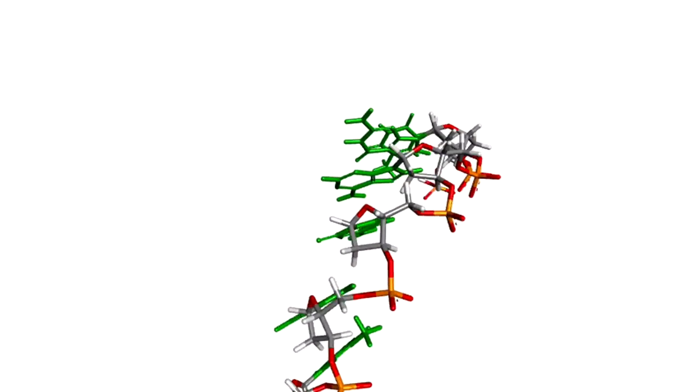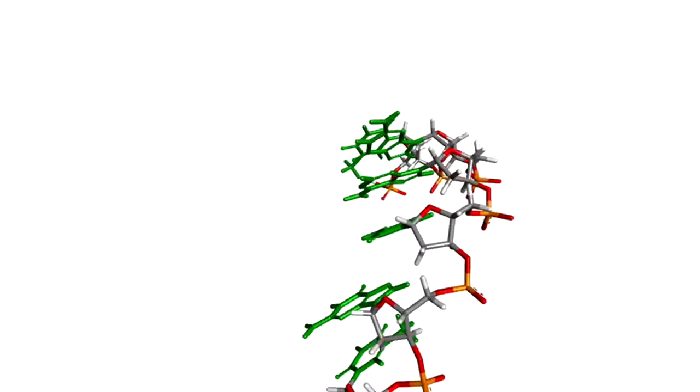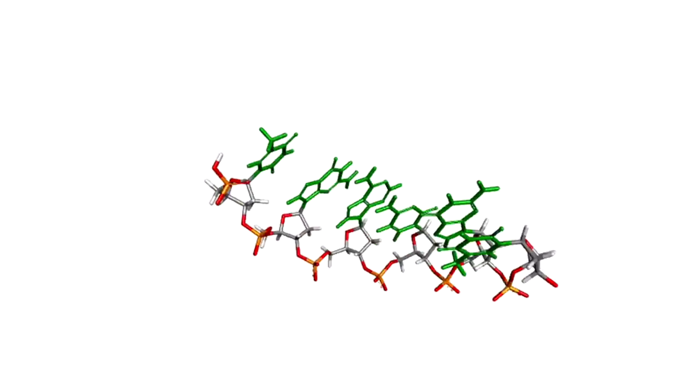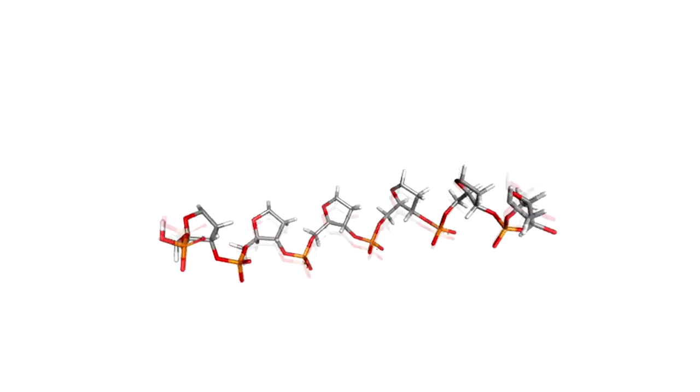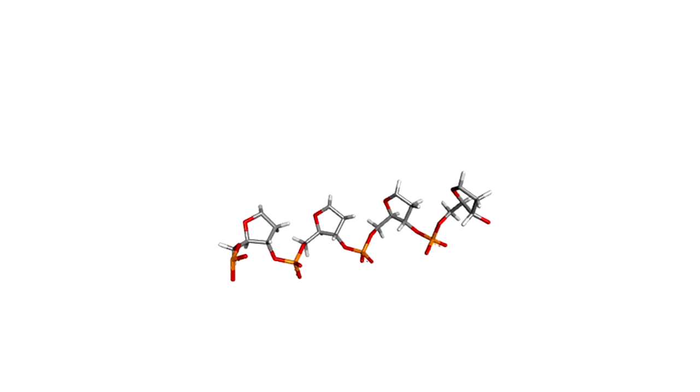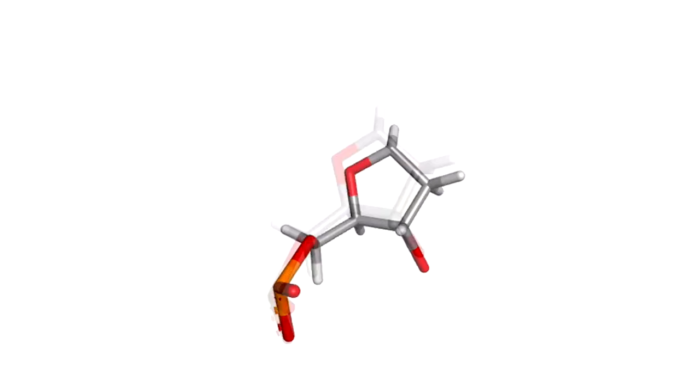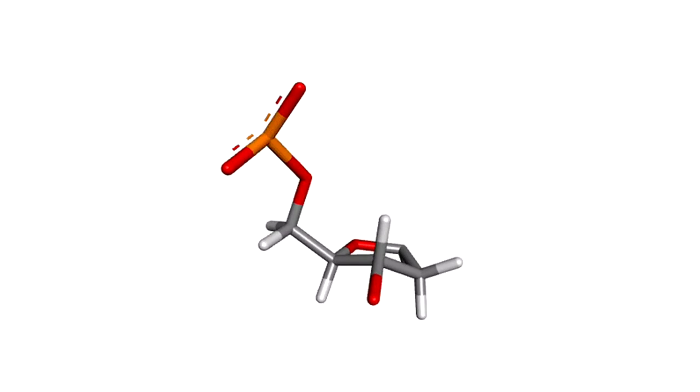Now let me remove the bases and show you only the sugar phosphate backbone. Here, I highlight the bases in green and remove them. Now you can easily see the pentameric sugar rings. Now let me show you one ring. Now let me orient it properly.